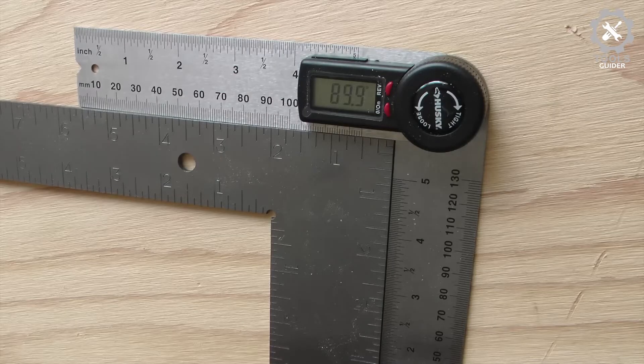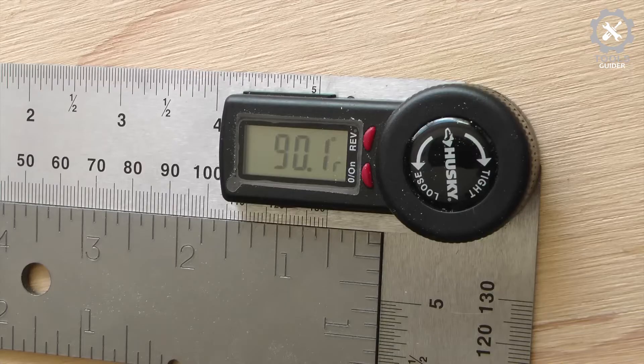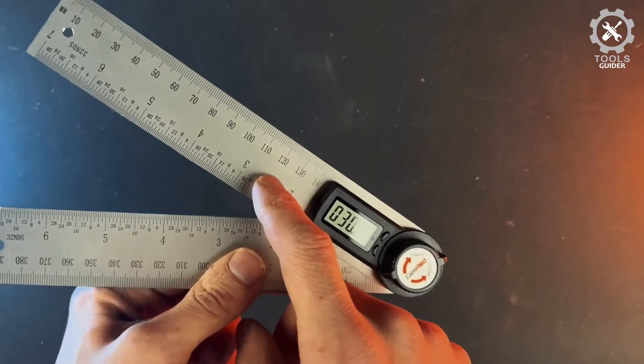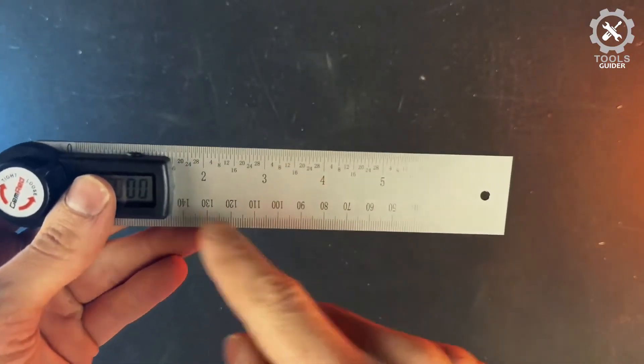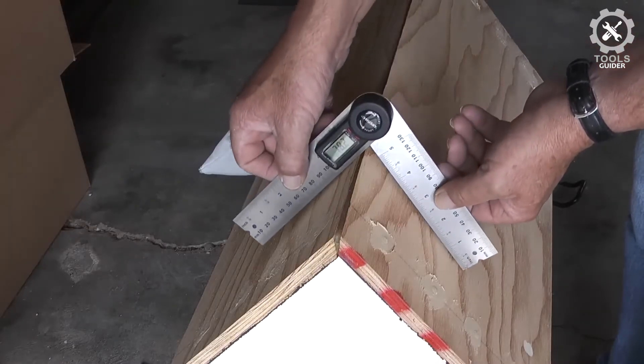The Gemred Angle Finder could be locked at any angle and zeroed at any angle for relative measuring. The stainless steel construction makes it very durable.